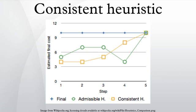Consequences of monotonicity: consistent heuristics are called monotone because the estimated final cost of a partial solution is monotonically non-decreasing along the best path to the goal, where the cost of the best path from start node is considered. It is necessary and sufficient for a heuristic to obey the triangle inequality in order to be consistent.